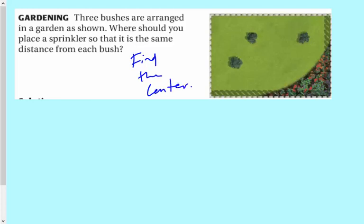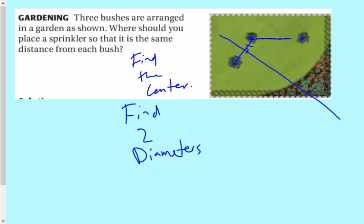So to do that, what we can do is we can find two different diameters. And the diameters are going to cross at the center because the diameters always go through the center. So to find a diameter, what we can do is place a point there and there. And then what we can do is we can find the perpendicular bisector of that segment there. And then what we can do is place a point here and here and find the perpendicular bisector of that segment. That should be the center.